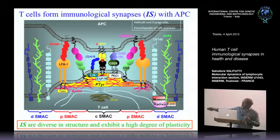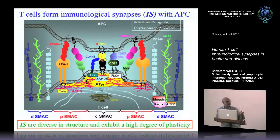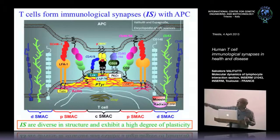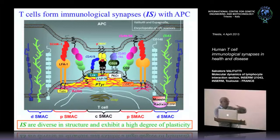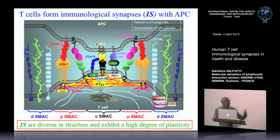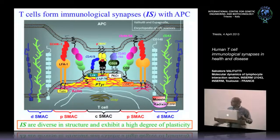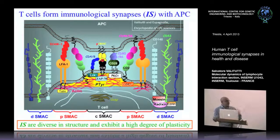The immunological synapse was originally described as a concentric area formed by a central supramolecular activation cluster, cSMAC, where the T-cell receptor, coreceptors, signaling molecules, and cytoskeleton converge. Around this is a peripheral ring containing molecules such as LFA-1 and ICAM-1, which anchor the T-cell to the cognate APC to allow signaling. More peripherally is the dSMAC, where large glycosylated molecules such as CD45 are excluded from the central signaling area.